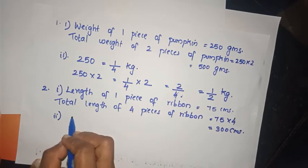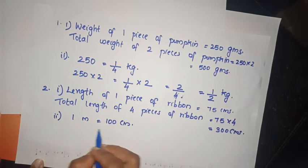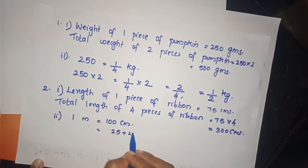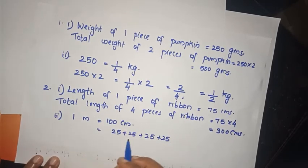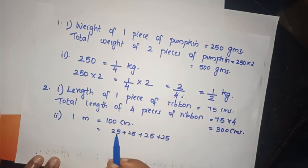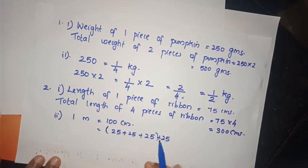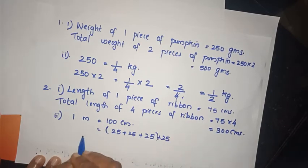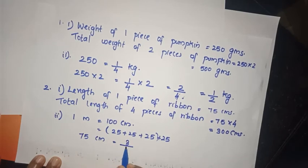1.5 meters is 100cm. How do we find the total length? We add 25 plus 25 plus 25. The 4 pieces of ribbon together give us 75cm expressed as a fraction: 75cm equals 3/4.